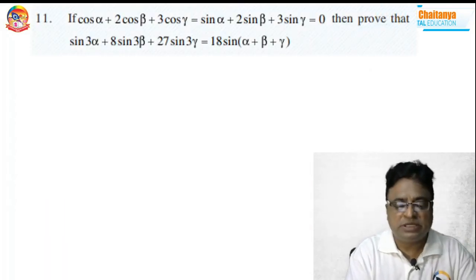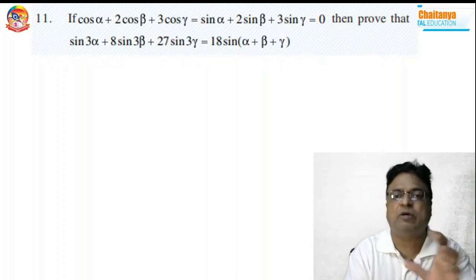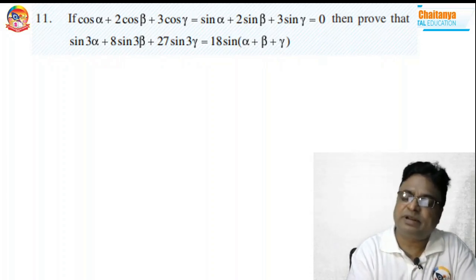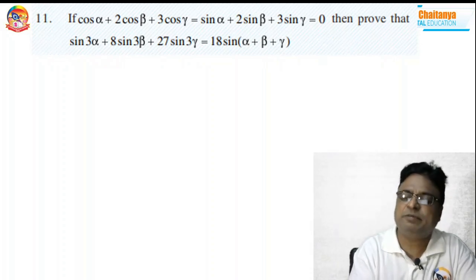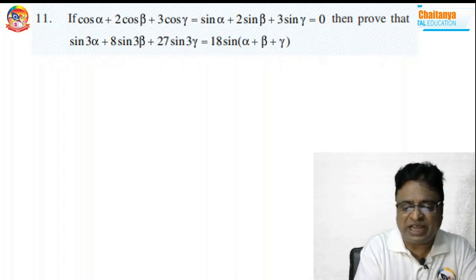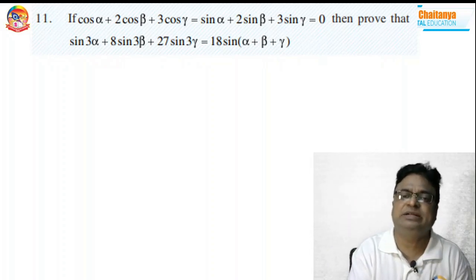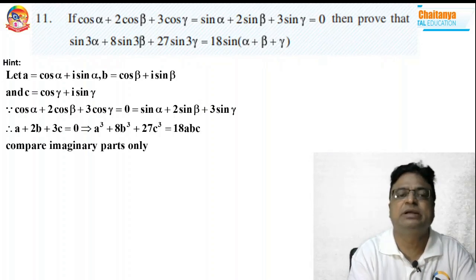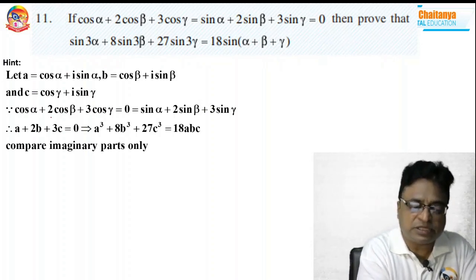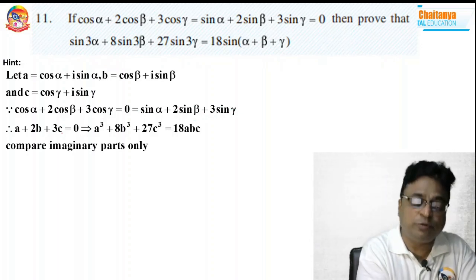Coming to the 11th problem — see the statement properly. There is a small difference when compared with the 10th and 11th problems. In the 10th problem, cos α + cos β + cos γ = 0 = sin α + sin β + sin γ was given. Whereas here, cos α + 2cos β + 3cos γ = 0 and sin α + 2sin β + 3sin γ = 0 is given. With the help of this, we can expect the result by looking at the quantity to be proved.